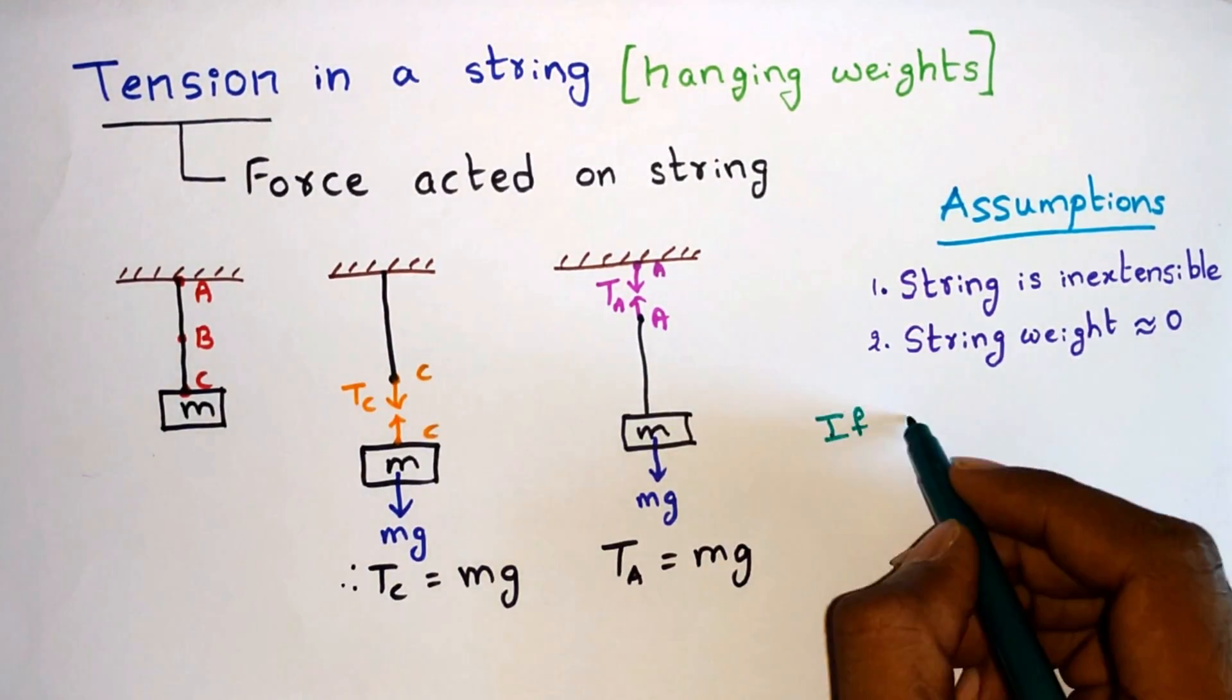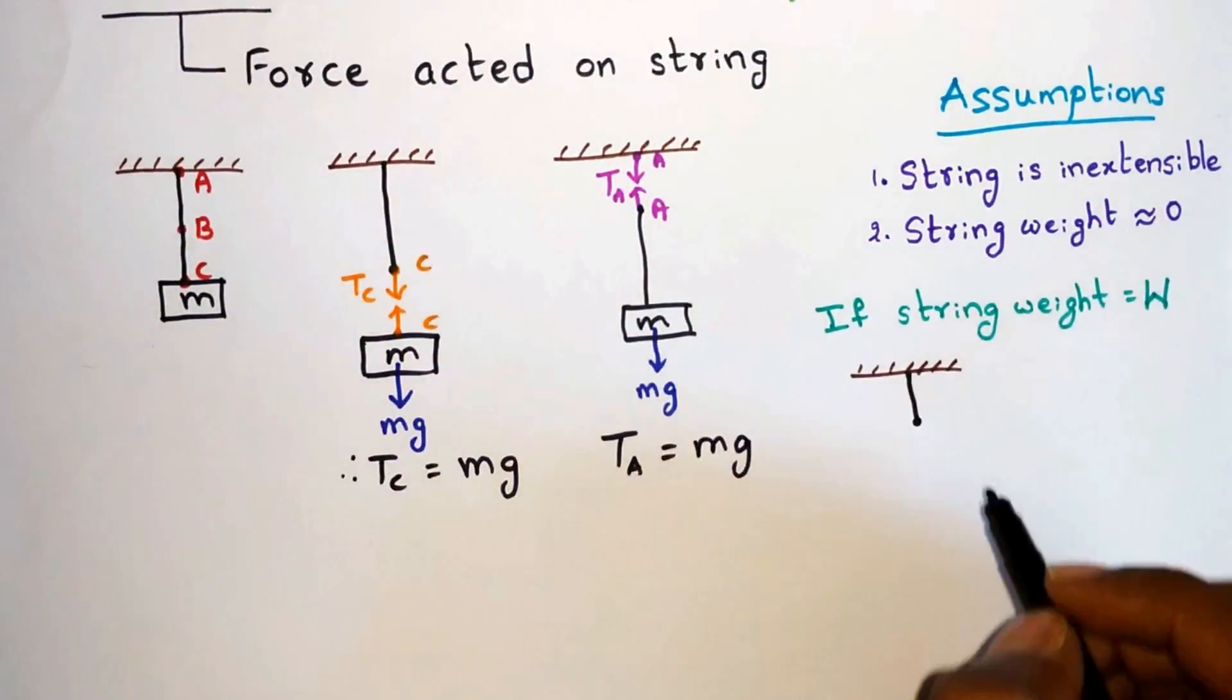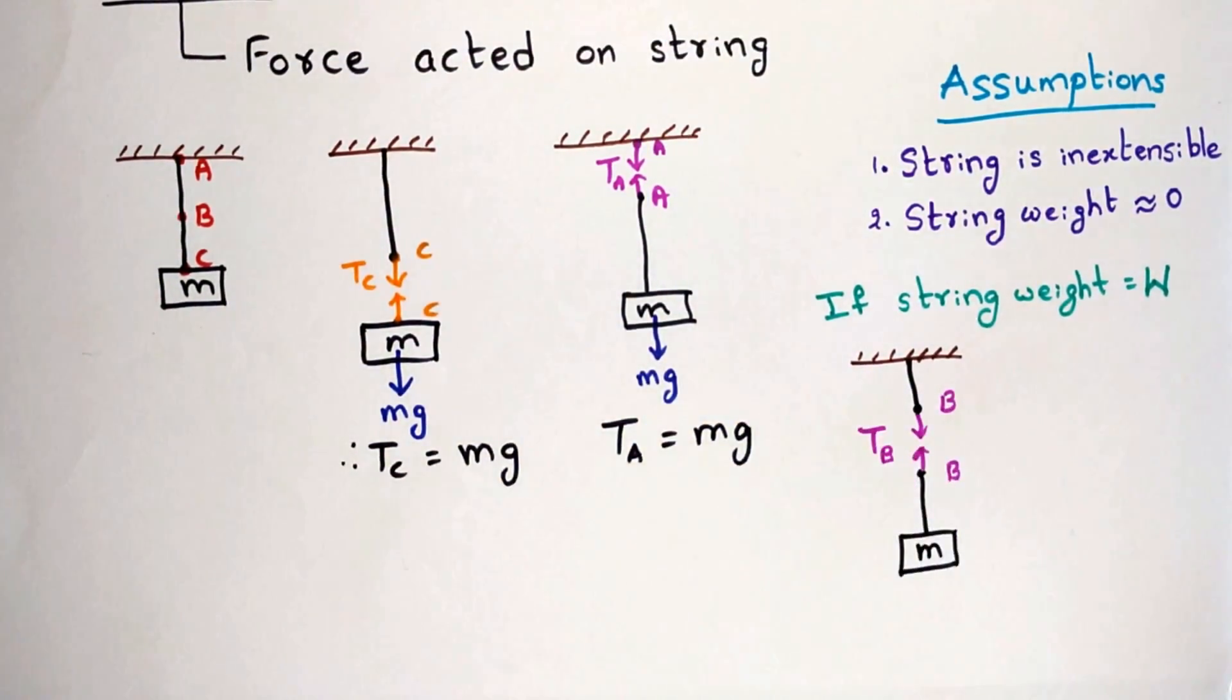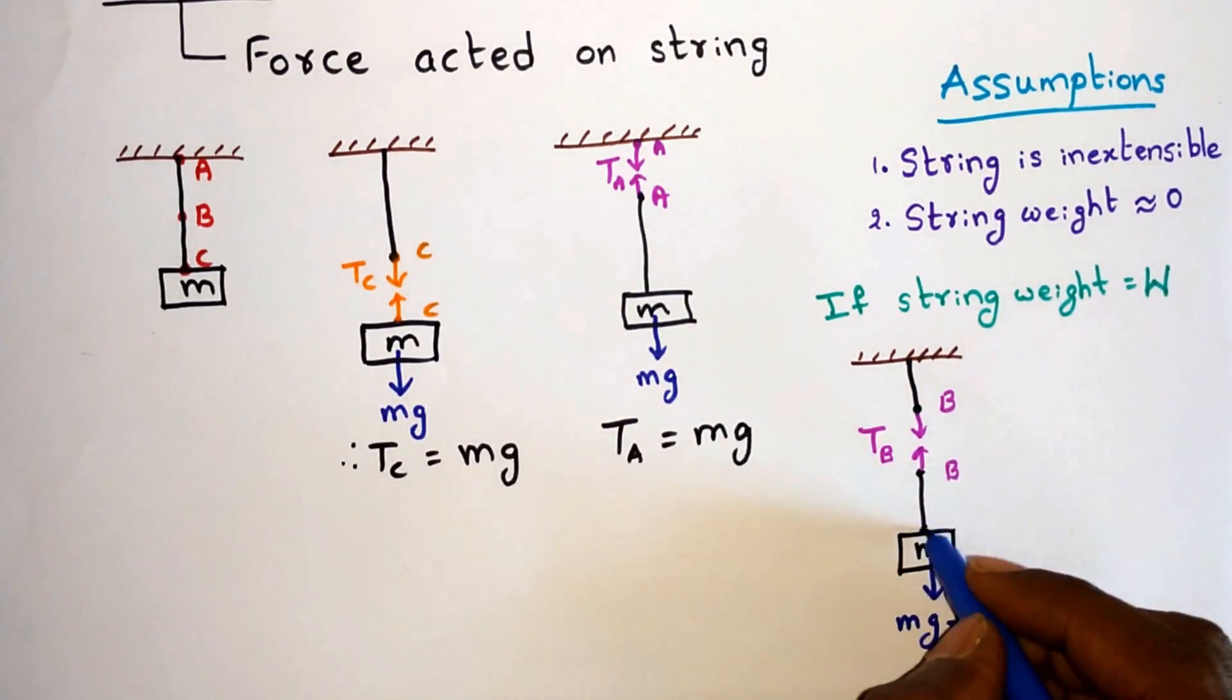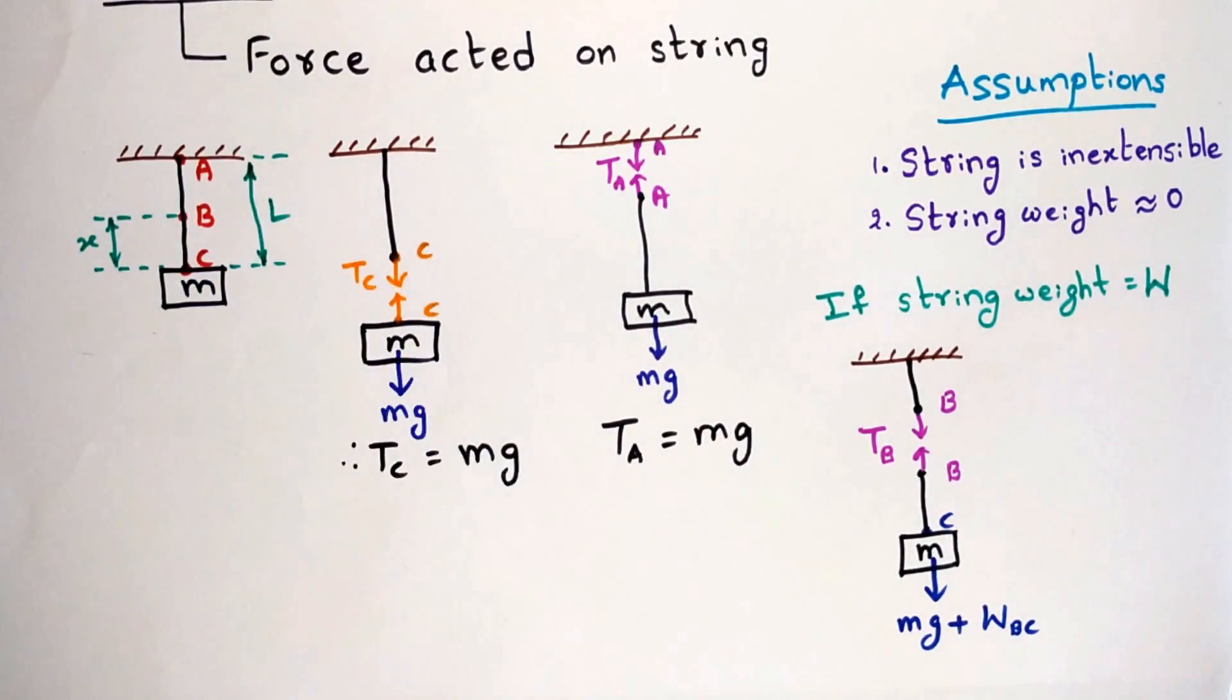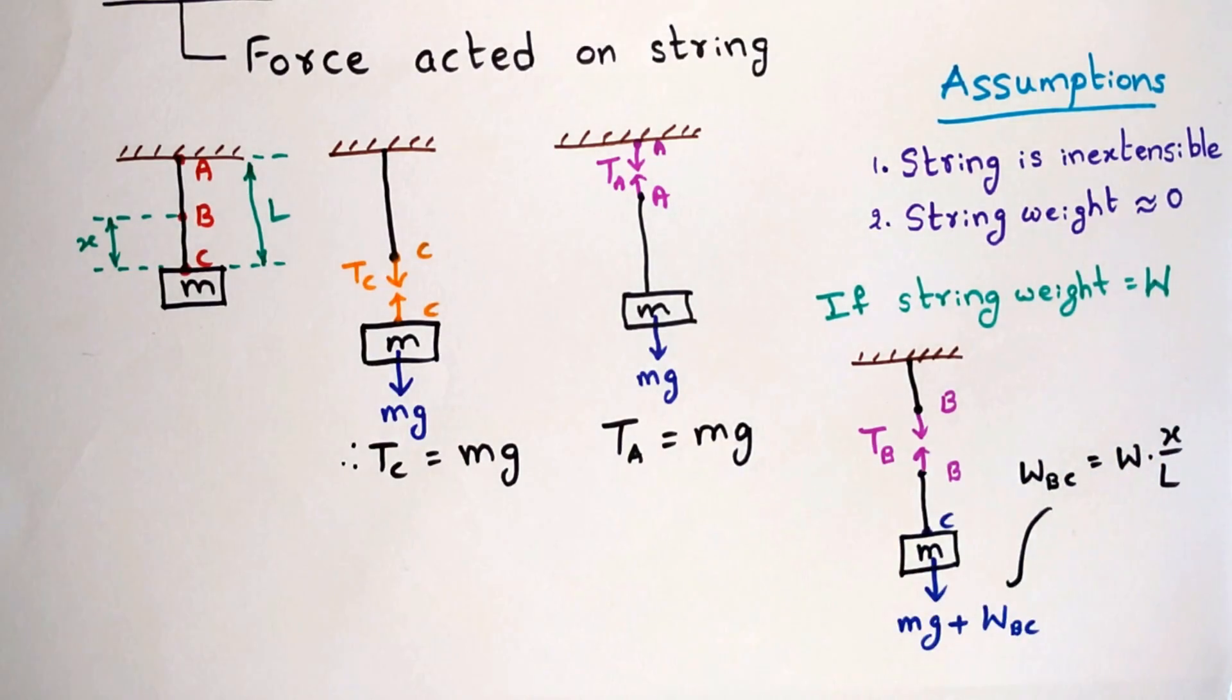But what if string weight is not negligible and let's say its weight as w. Now consider the tension at b. So now Tb will be supporting both the mass m and the weight of the string from b to c. If you take the length l as the total length and x as the length from b to c, then Wbc equals wx by l. Therefore Tb equals mg plus wx by l.